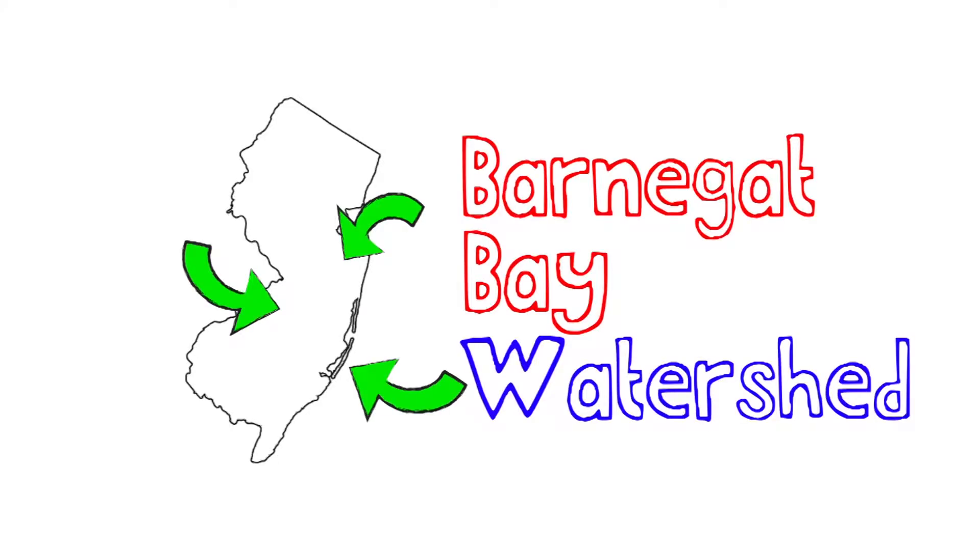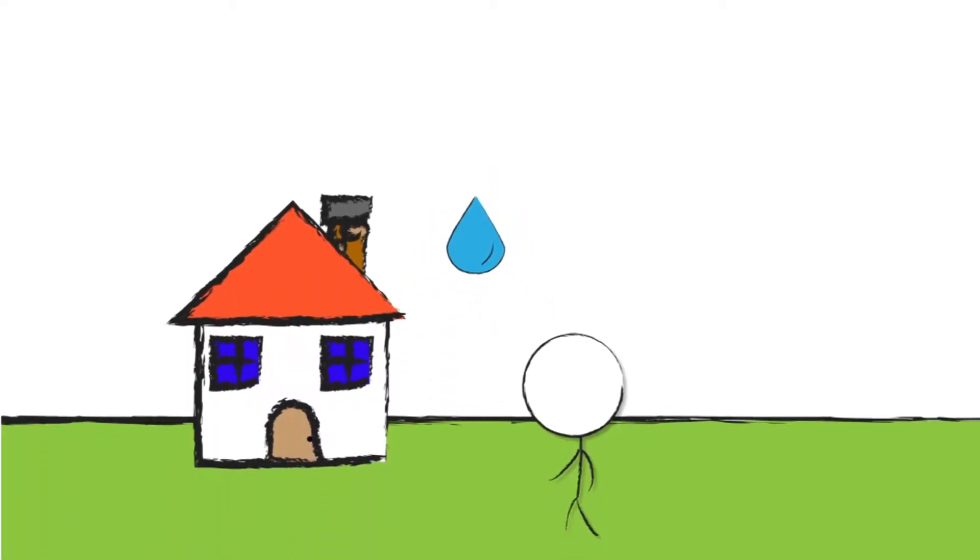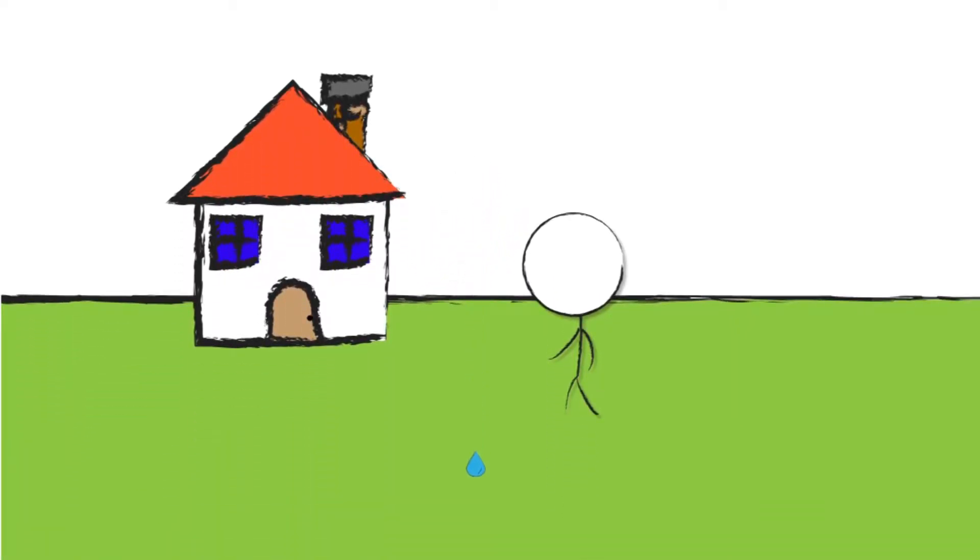If you live here, then you probably know you live in something called the Barnegat Bay Watershed. What that means for you is that every drop of water that lands on your lawn eventually finds its way into Barnegat Bay.